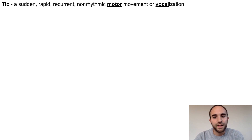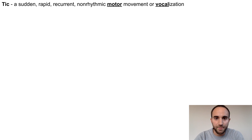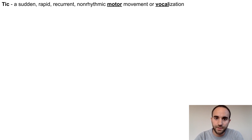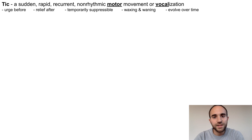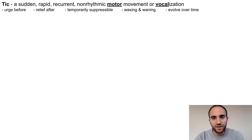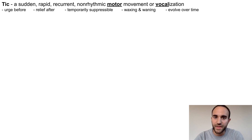Let's review what a tick is. A tick is defined as a sudden, rapid, recurrent, non-rhythmic motor movement or vocalization. Ticks involve having a strong urge to perform the tick beforehand, relief of the urge after performing the tick, and are temporarily suppressible with effort.